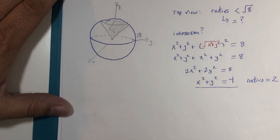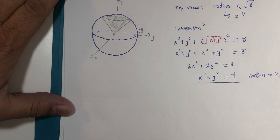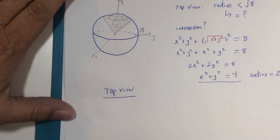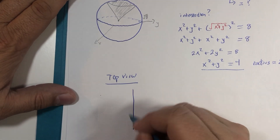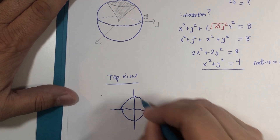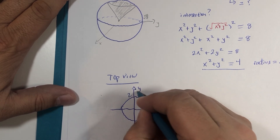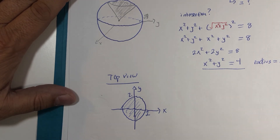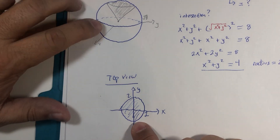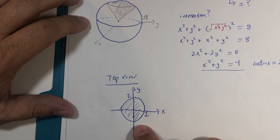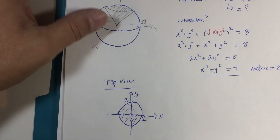What that means for us is that we consider our top view to be a circle of radius 2 units, which we can set up in both rectangular and polar form depending on what is asked of us. We need this visualization in order to properly set up our triple integral.